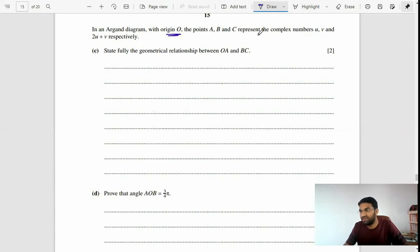State the fully geometrical relationship between OA and BC. We have to find out the vectors. OA is u, which is negative 4 plus 2i. BC equals C minus B, which is 2u plus v minus v, giving 2u.